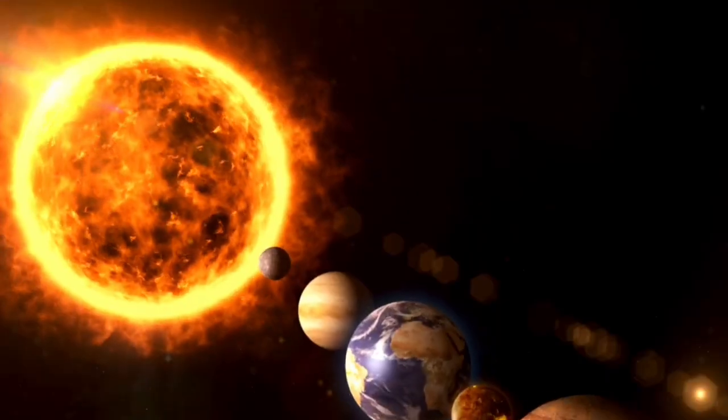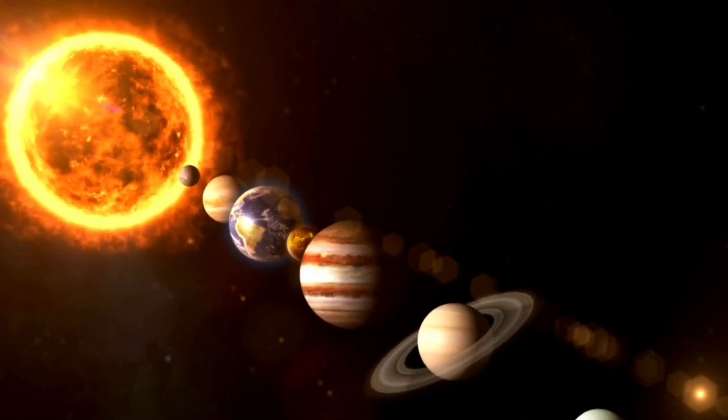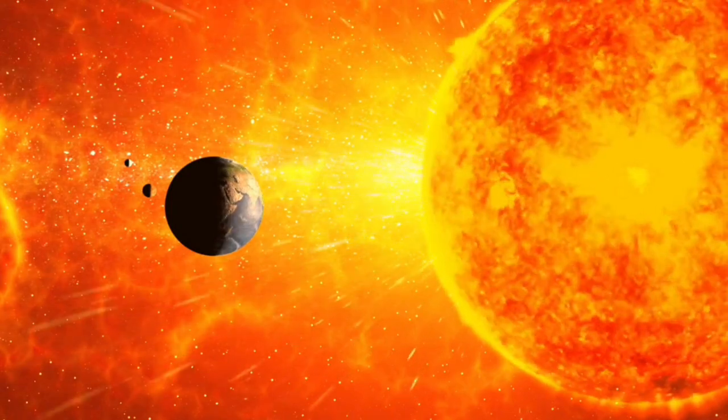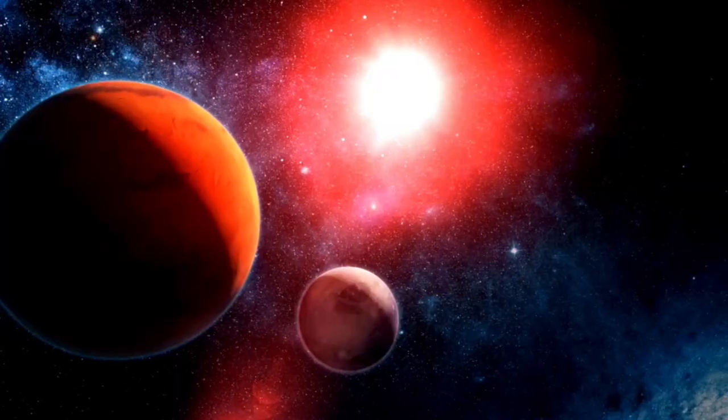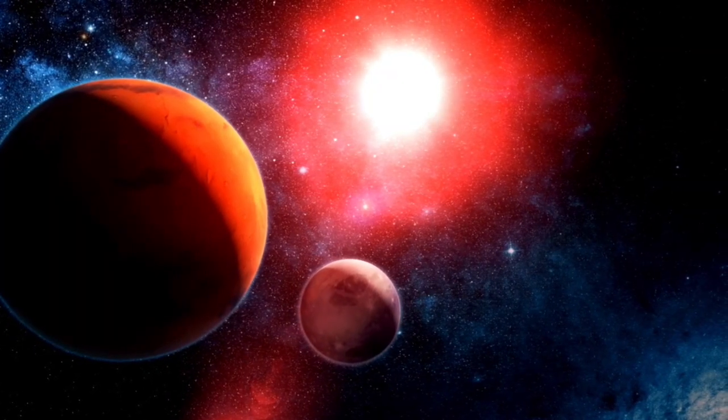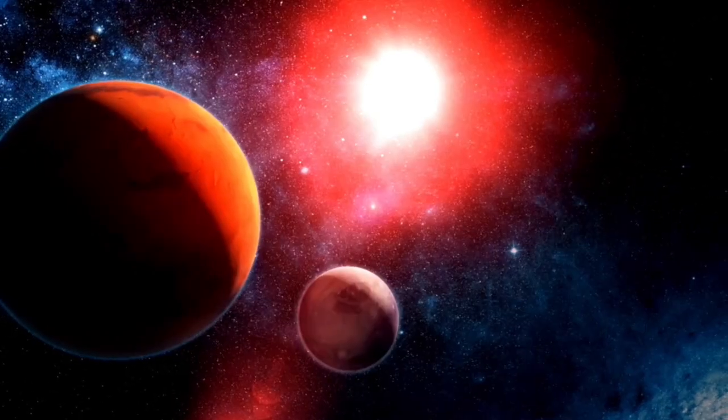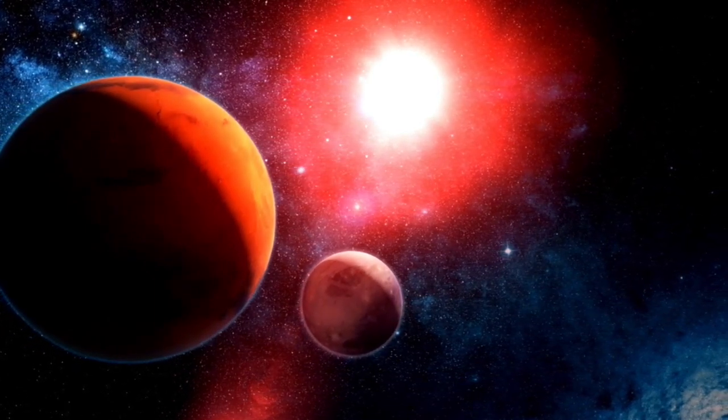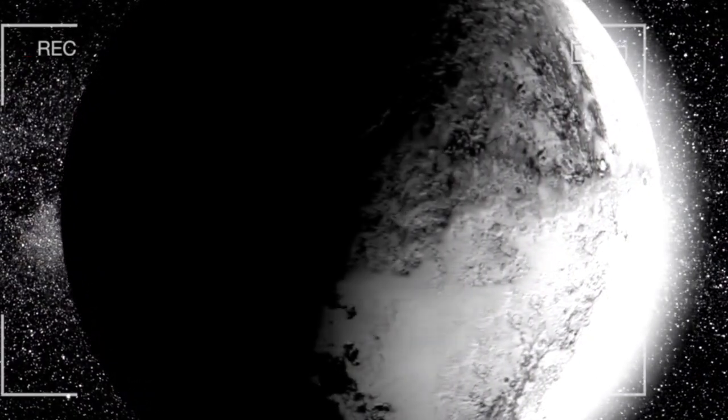Due to its proximity to Proxima b, the planet is constantly bombarded with intense solar radiation, including powerful flares that are many times stronger than those emitted by the Sun. For instance, in April 2021, a massive flare from Proxima Centauri was detected. This flare was powerful enough to potentially strip away any atmosphere Proxima b might have had. Such events highlight the dangers posed by red dwarf stars and raise serious doubts about the planet's ability to support life.